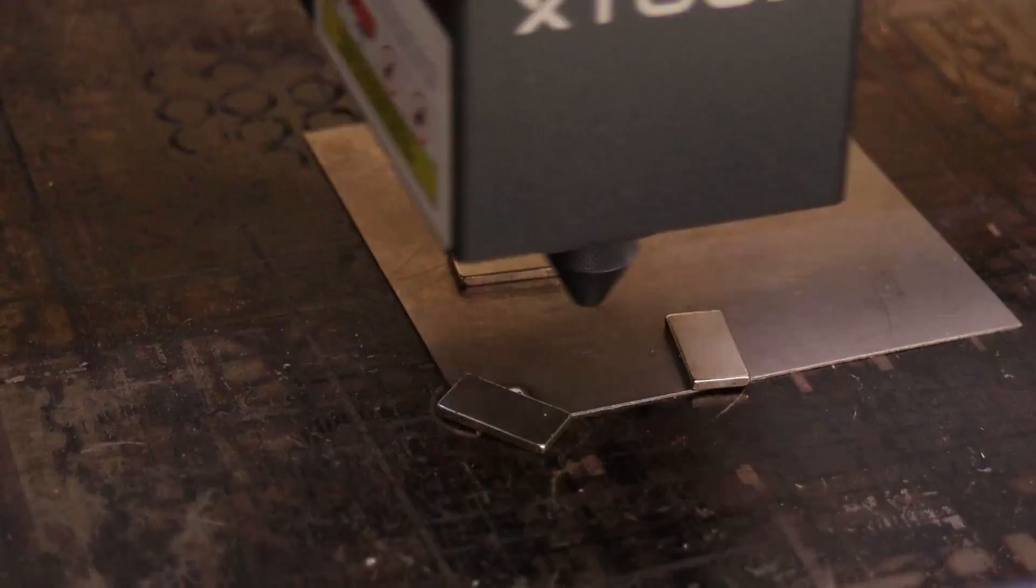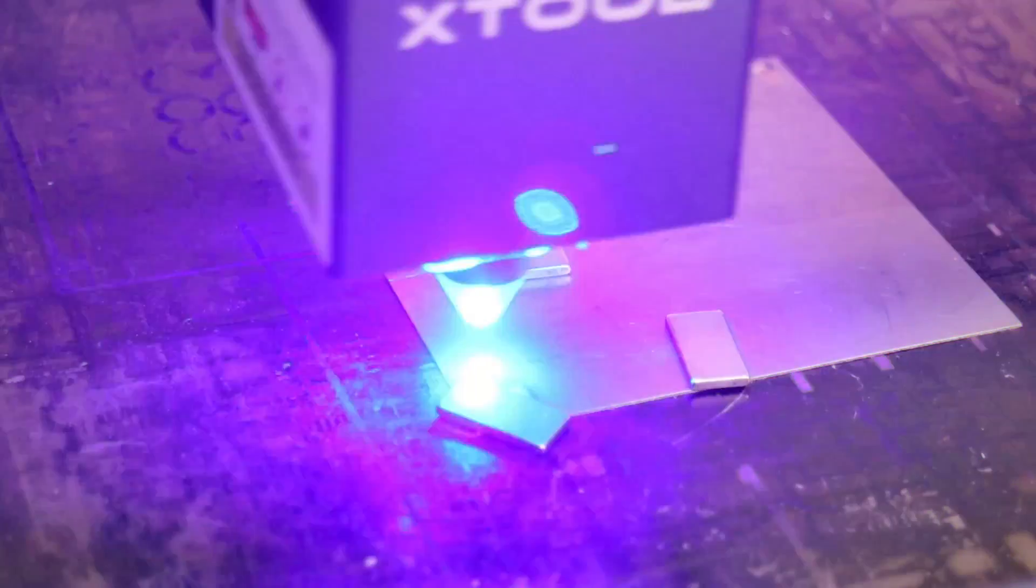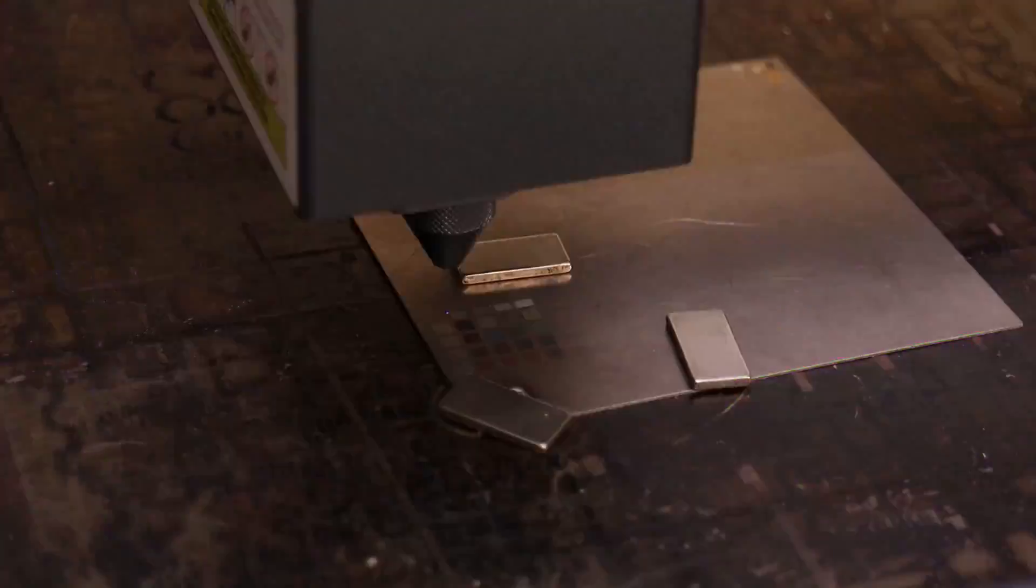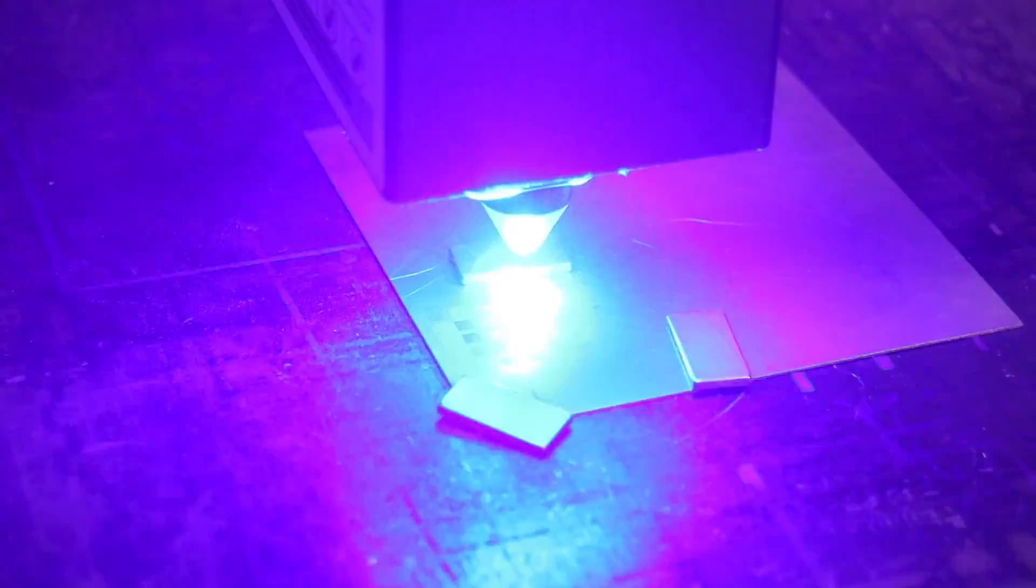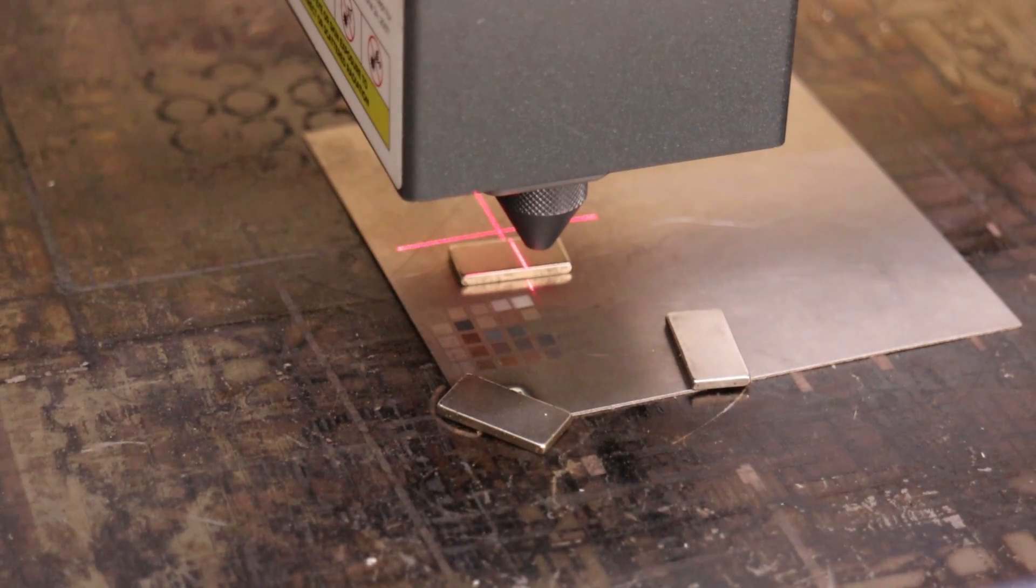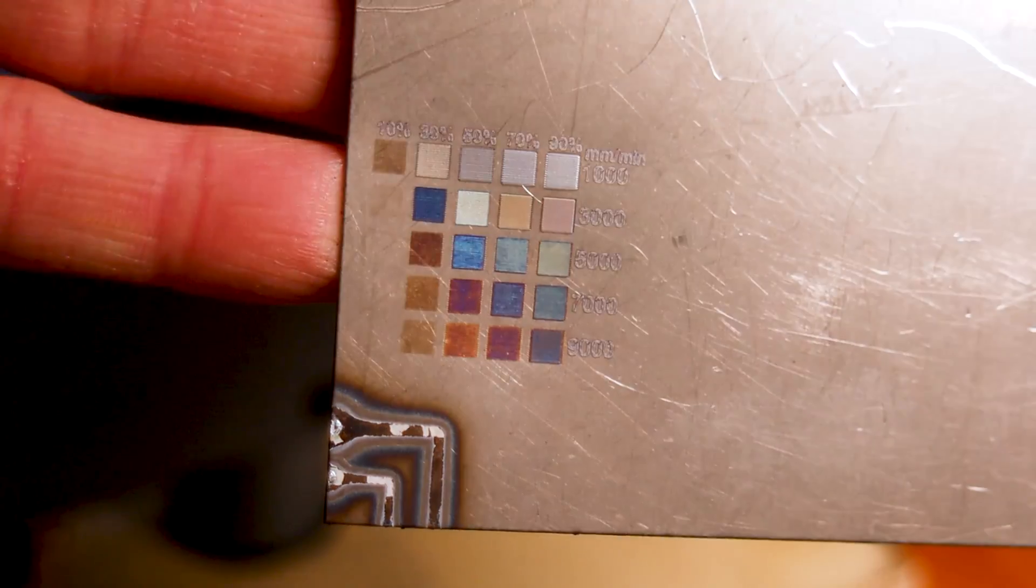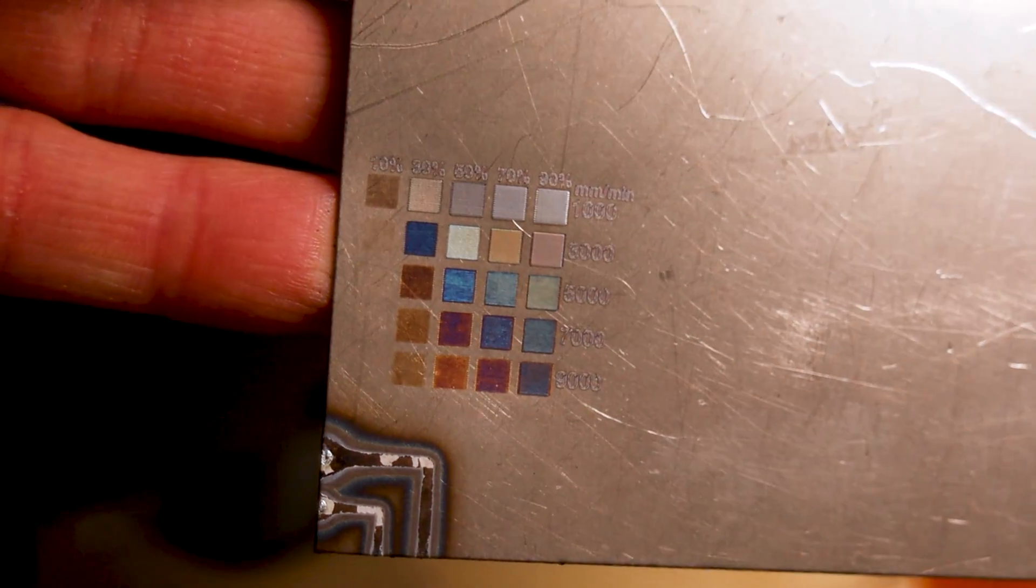You can also use this laser module to make colored engravings on titanium by heating it to certain temperature which causes colored oxides to form on the surface. This was my first try. I believe that with some more tweaking you could produce even nicer colors.